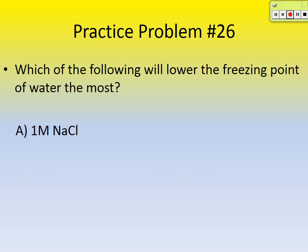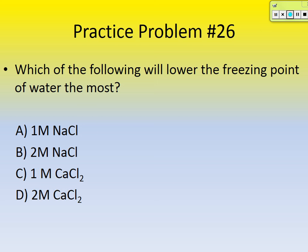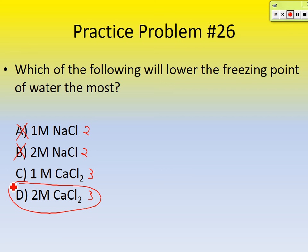Practice problem 26: which of the following will lower the freezing point of water the most? Options A and B each break into two ions, so we can eliminate those. Options C and D each break into three ions, but D is the correct choice because its molarity is 2 — meaning there are two moles per liter of this compound which breaks into three ions. So it's twice as concentrated, making D the right answer.